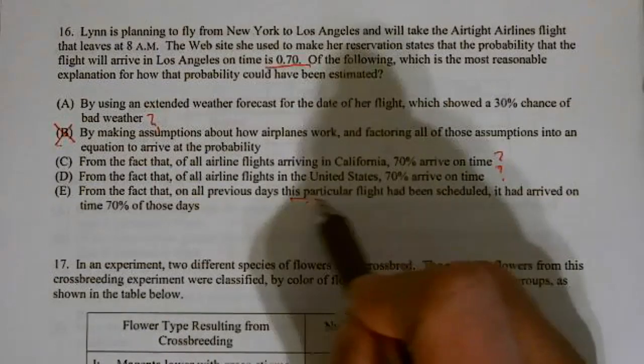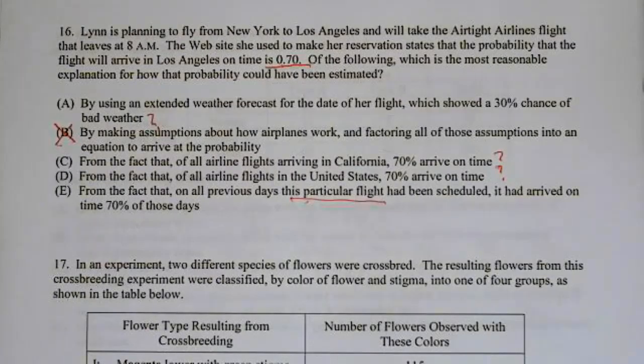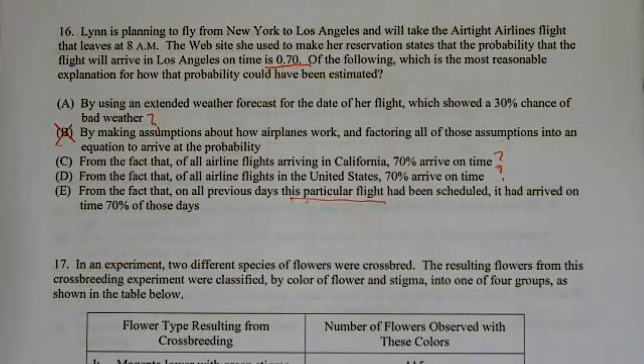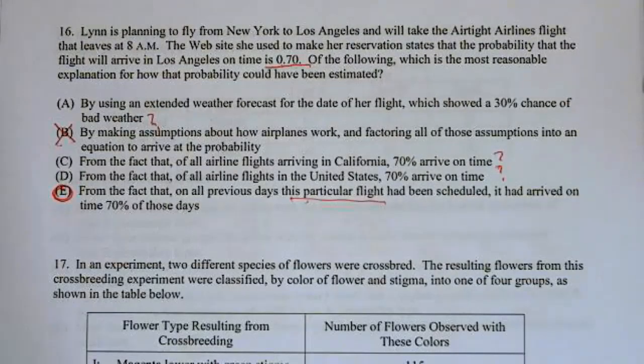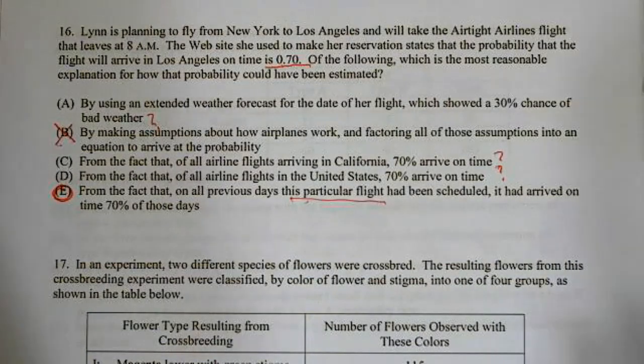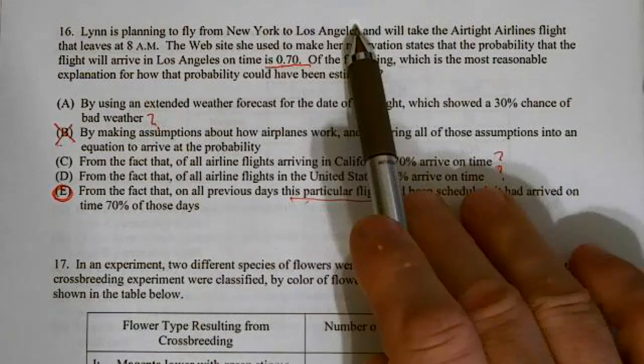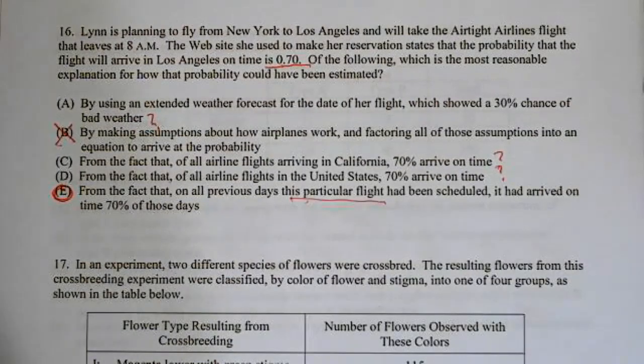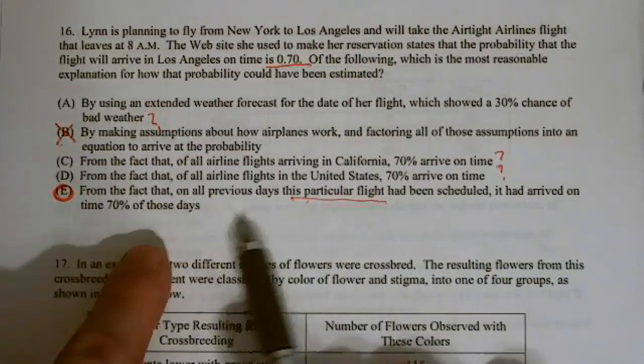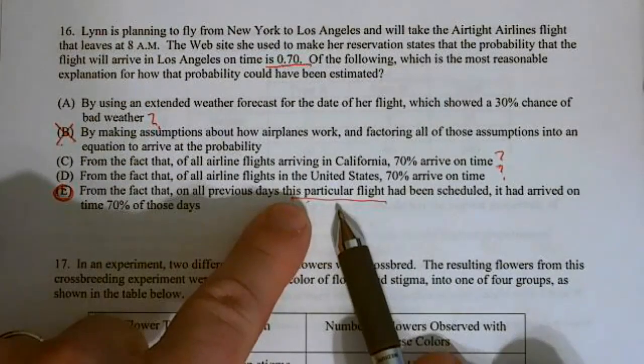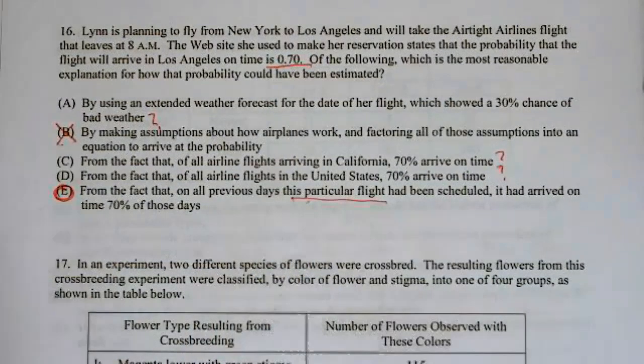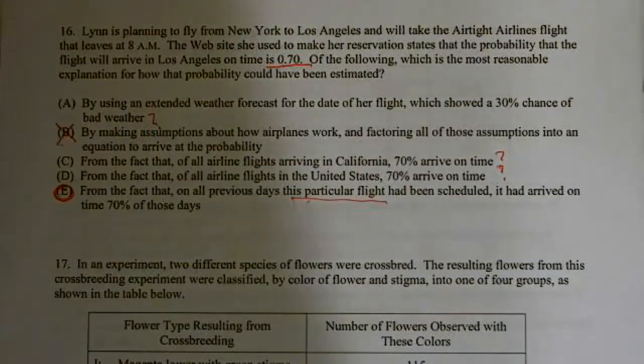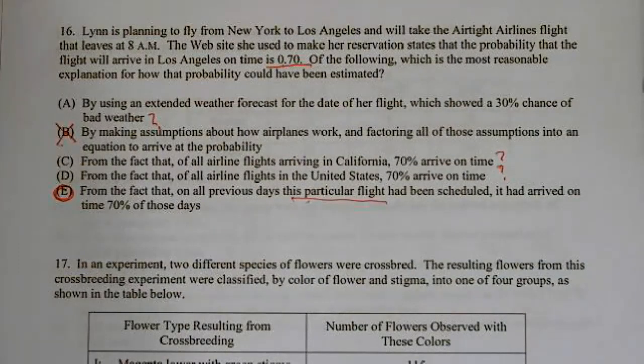From the fact that of all airline flights in the United States, 70% arrive on time. Again, we're generalizing to the US and not to Los Angeles. From the fact that on all previous days, this particular flight, the one that flies at this time from New York to Los Angeles has arrived on time 70%. This one controls for more variables because it basically says we're only looking at this specific time and this specific location from New York to Los Angeles. Everything else was broader than that. So 16, the best answer is E. And again, we're always looking for the best answer.